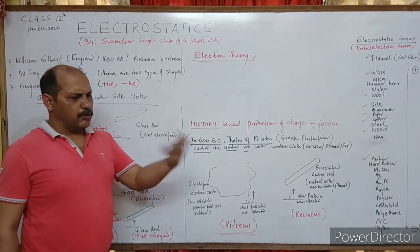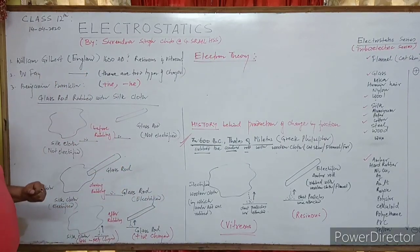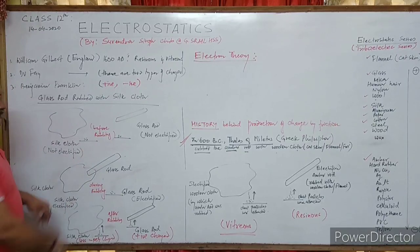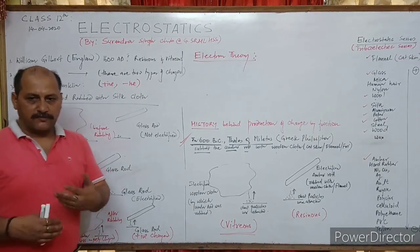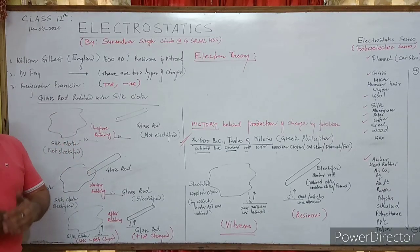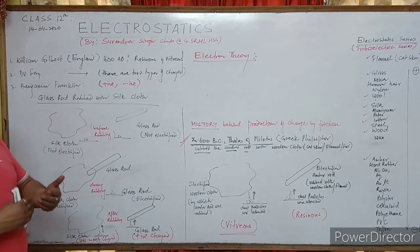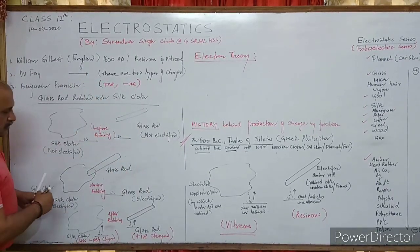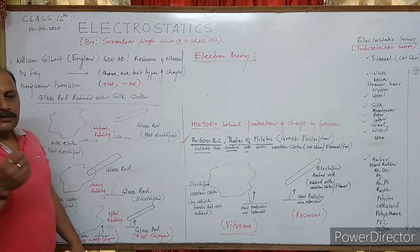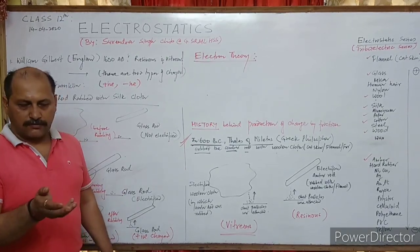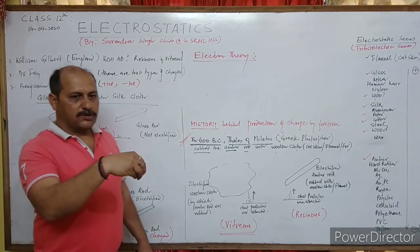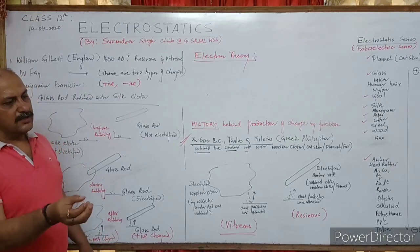That is why every body which is not rubbed is neutral. Now when we rub two things — a glass rod versus a silk cloth — electrons get transferred from one body to another. The body which loses electrons — if an atom loses one electron, it means one proton is more, and it attains a positive charge.